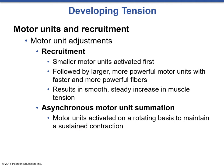Motor units work together through a process called recruitment. Smaller motor units are activated first, and we gradually increase to more powerful motor units with faster and more powerful fibers as they are required. Our body likes to do the least amount of work possible, which is why it's important to gradually warm up the body before engaging in larger activity. This recruitment pattern results in a smooth, steady increase in muscle tension, as opposed to a violent increase.